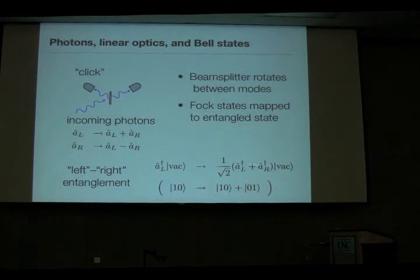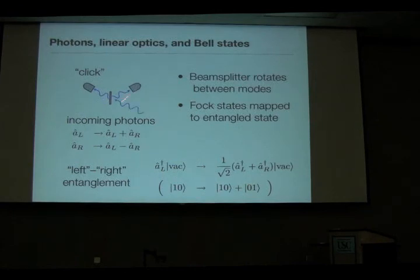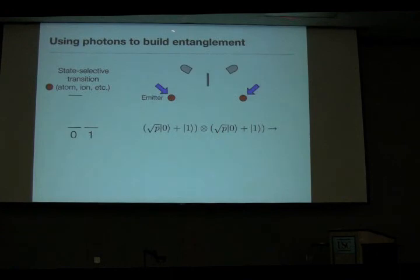Nonetheless, it is a useful thing to note, because it means that if I were to measure a click — the existence of a photon at one of these detectors — it would project some other system via a Bell state measurement. The left photon gets split, the right photon gets split, and the which-path information is lost in the process, which means that in principle we can entangle some bit of information connected with these photons. The standard idea is to use photons to build entanglement with some type of quantum memory attached to those photons.